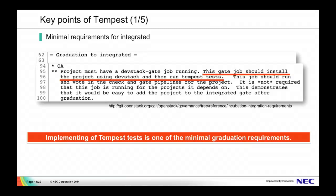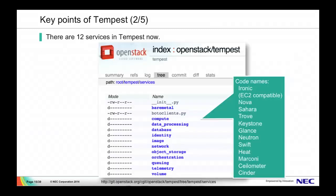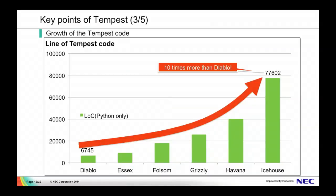The documentation says the gate job should install the project using DevStack and run Tempest tests. Implementing Tempest tests is one of the minimum graduation requirements from an incubation project. There are 12 services in Tempest now. The Tempest codebase has grown significantly — about 10 times more than the year before.